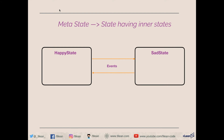Let's go back to our happy state. We are in a happy state, but there are chances that there are different kinds of happiness — I may be in an extremely happy state or I may be in a somewhat happy state. The state which has inner states to define its characteristics more properly is called a metastate. Between inner states like extremely happy and somewhat happy, we can move around just like we move between outer states like happy and sad, again based on some events.